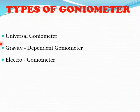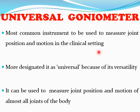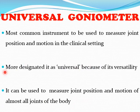Types of goniometer: universal goniometer, gravity-dependent goniometer, and electrogoniometer. The universal goniometer is the most commonly used instrument for measurement of joint position and motion in the clinical setting. It is called universal because of its versatility — it can be used to measure joint position and motion of almost all joints of the body.